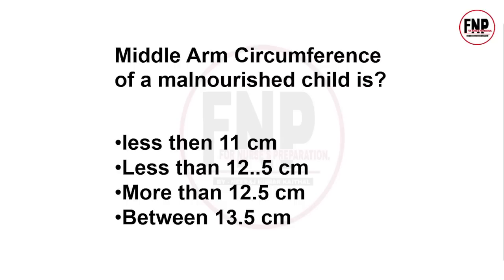Next question: Mid-upper arm circumference of a malnourished child is how much? Agar kisi bachche mein malnutrition hai to uska mid upper arm circumference kitna hoga? Options: less than 11 cm, less than 12.5 cm, more than 12.5, ya 13.5 tak. The right answer is option B, less than 12.5 cm.